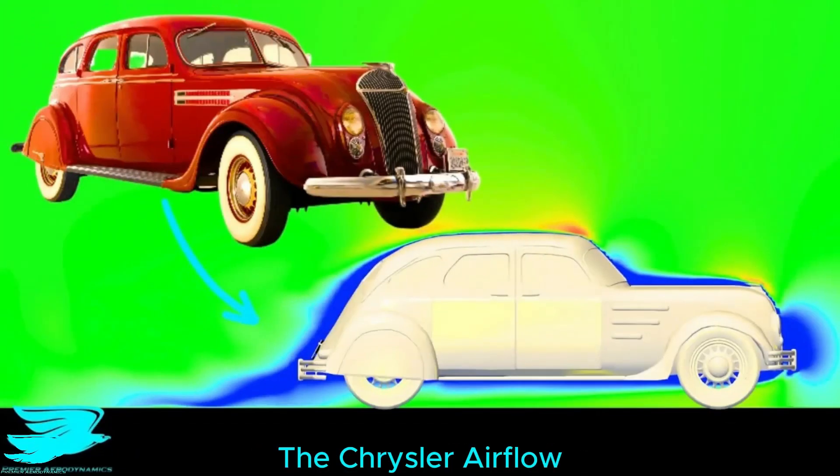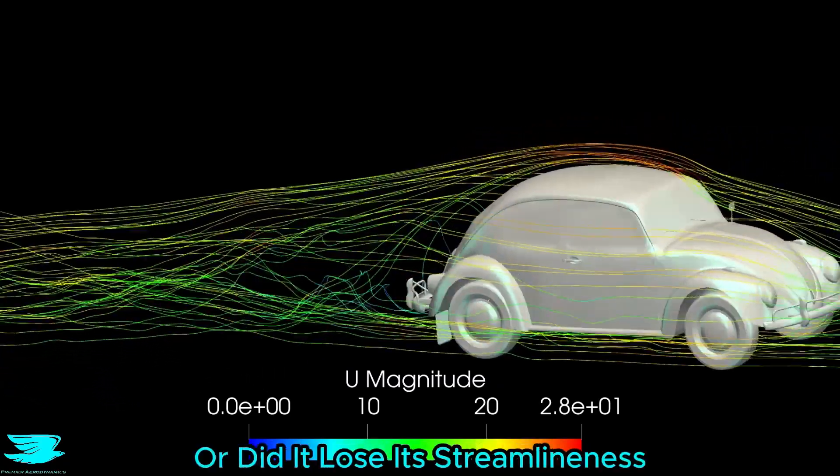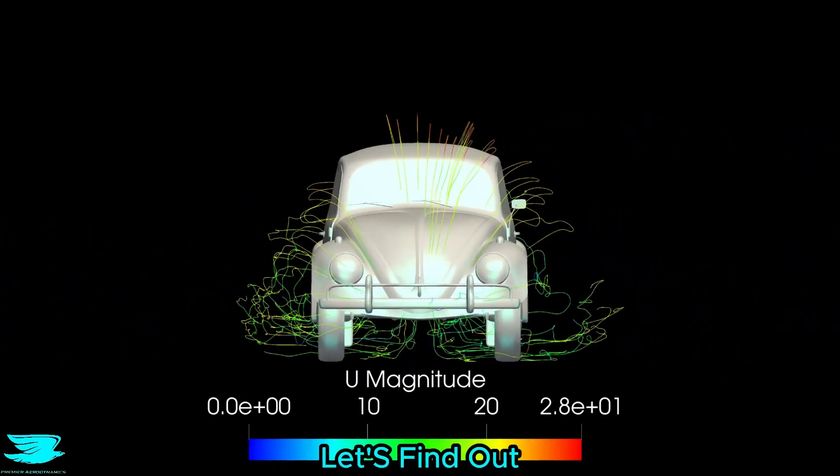Anyway, it looks very similar to the Chrysler Airflow, which we found to be really low drag, but did the Beetle inherit its aerodynamics too, or did it lose its streamlinedness along the way? Let's find out.